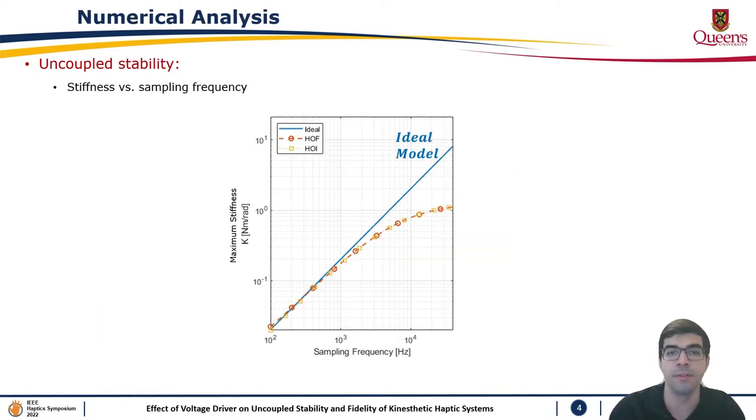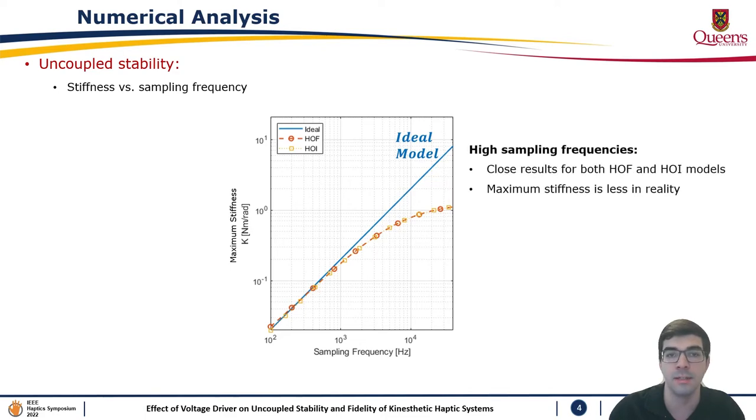Here we have the uncoupled stability numerical results for comparing stiffness versus sampling frequency. We can see that the proposed models show a different relationship compared to the ideal model. For high sampling frequencies, both models show that maximum stiffness is less than provided by the ideal model.